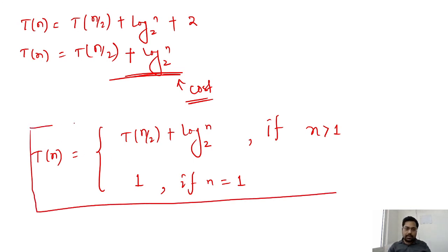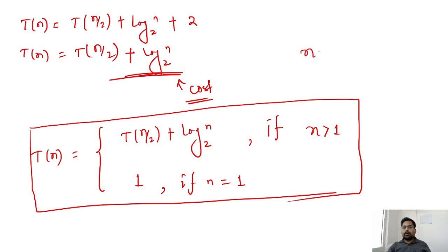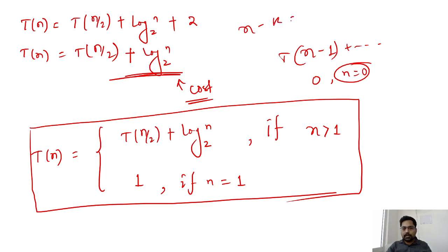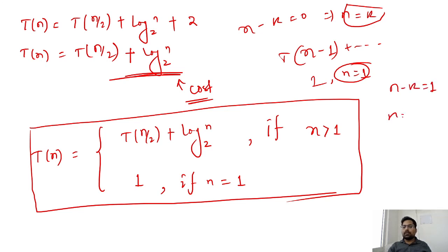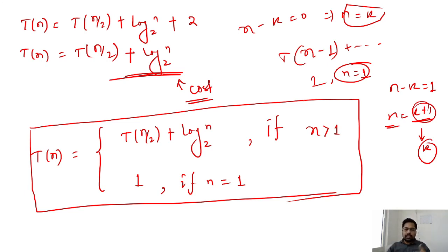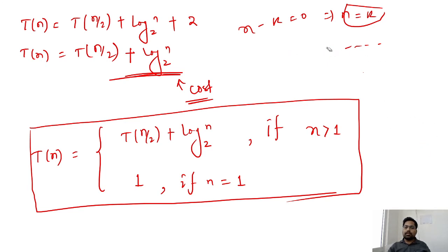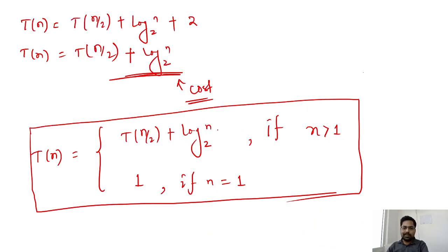Sometimes you get something like T(n-1), so in that case the base condition will be n = 0. Why? Because you are writing n - k = 0, giving n = k. If you write n - k = 1 instead, then n = k + 1, and while k+1 is approximately k, it is better for assumption purposes to use zero for minus cases and one for division cases. This is how we develop the recurrence relation. I hope you have understood it. Thank you for watching, have a good day.